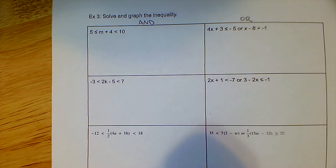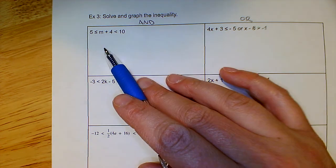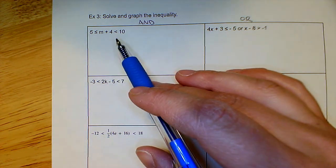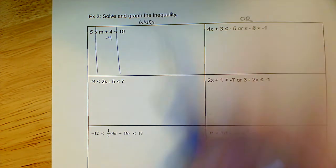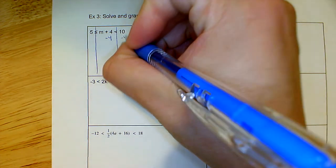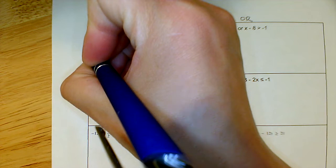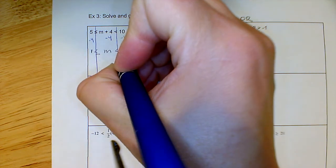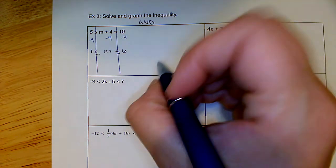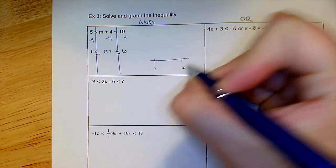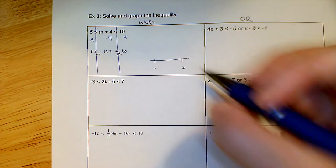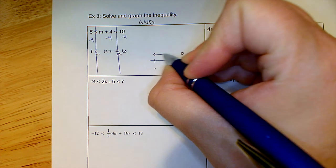When solving an 'and' situation, you can split it into two or leave it as one big inequality — I find it easier to leave it as one. We just solve it: subtract 4 from the very left and very right sides. Remember, there are three sides: left, middle, and right. That gives me 1 is less than or equal to m, which is less than 6. I graph with a closed circle at 1 and an open circle at 6, and connect them.